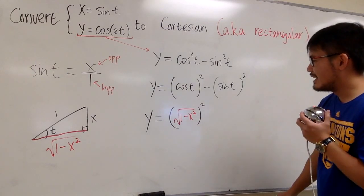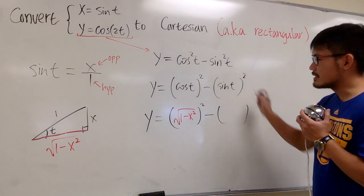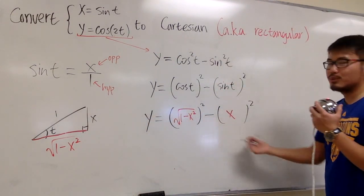So continue, we have the minus, and then for sine t, it's just x over 1, and that's x. And then we have that squared, and this is what we have.